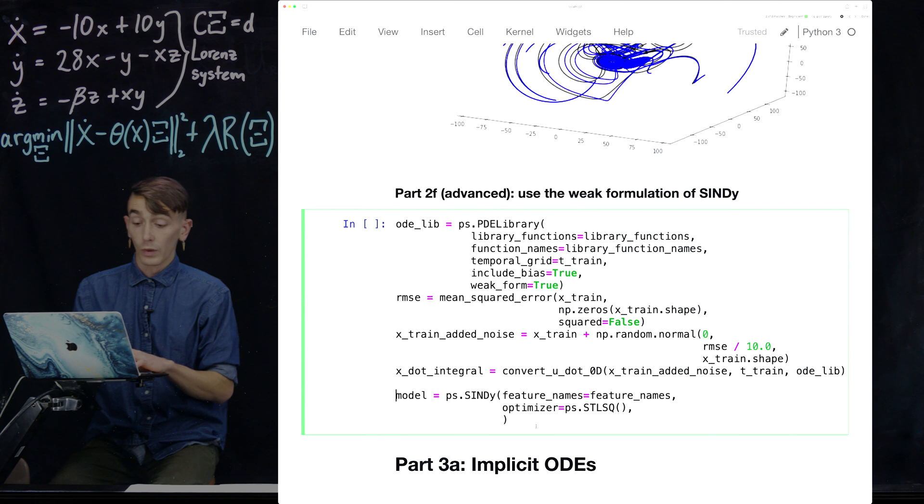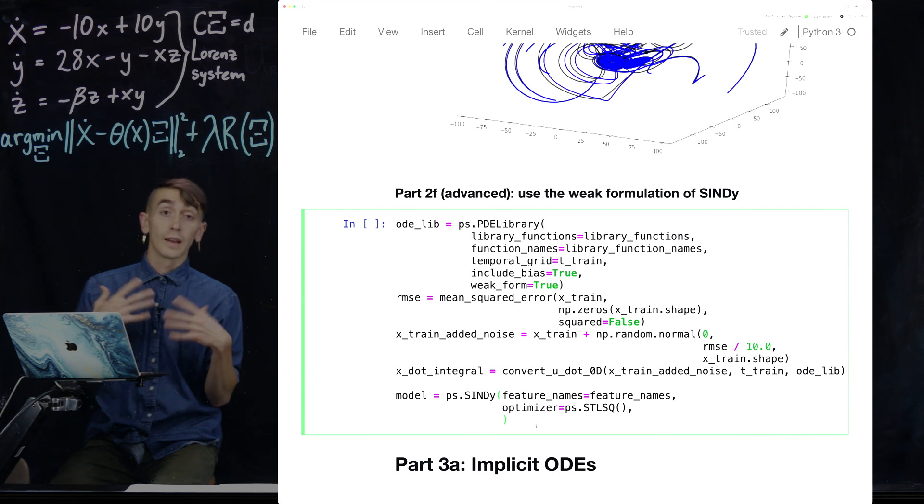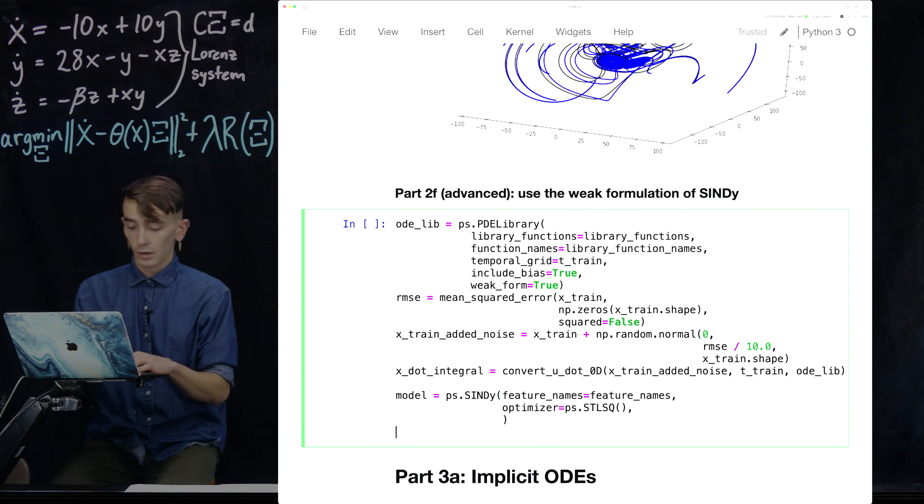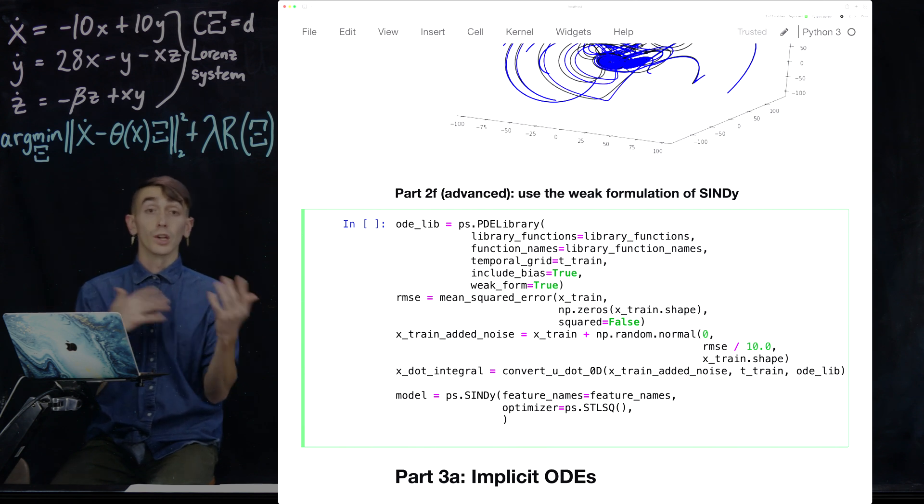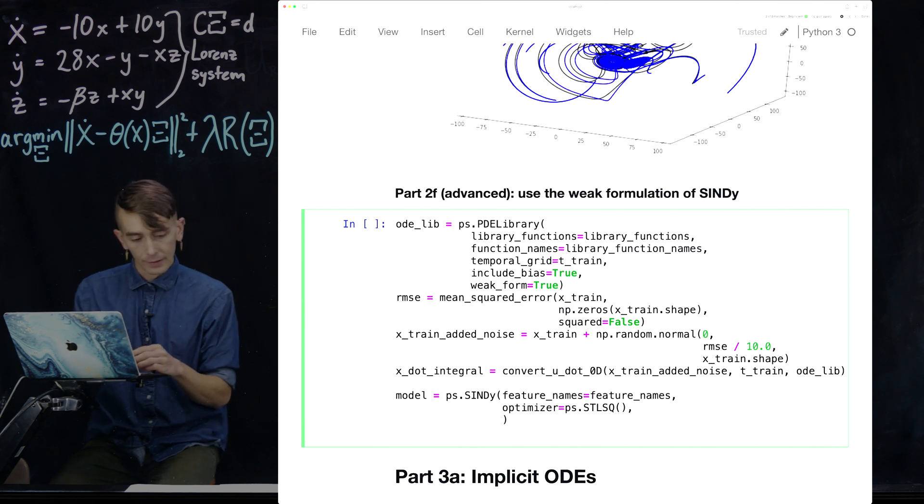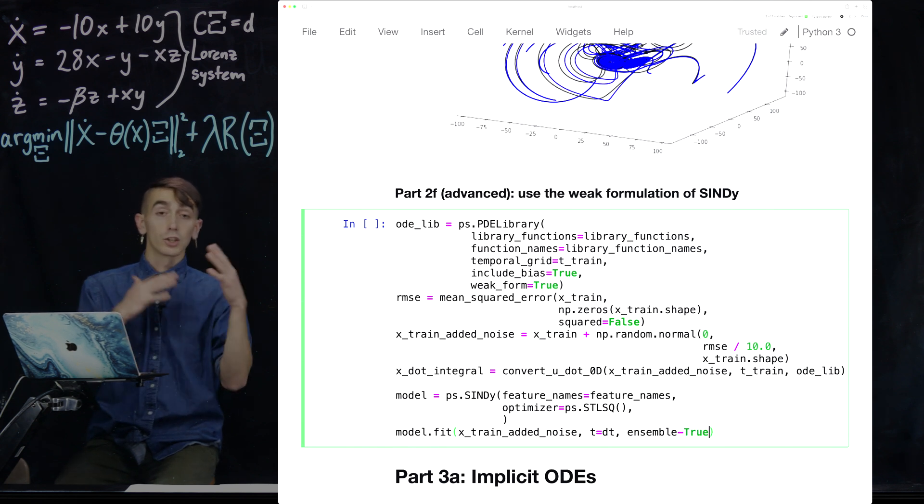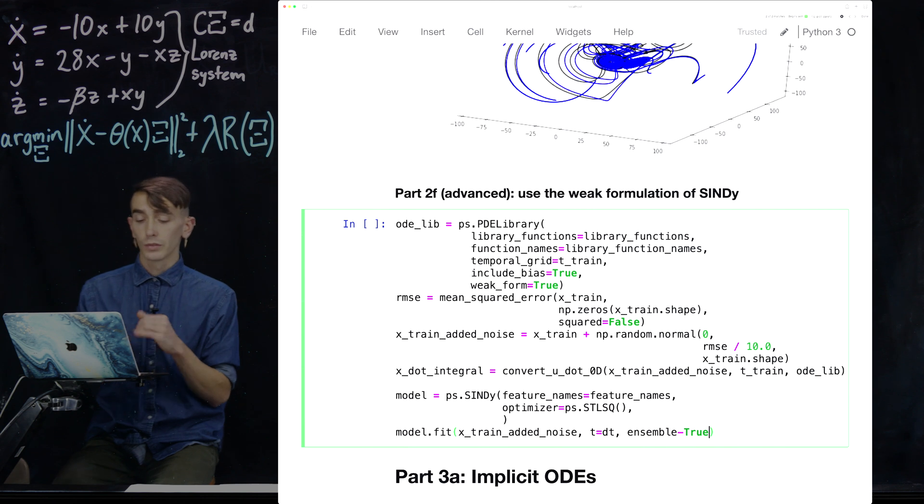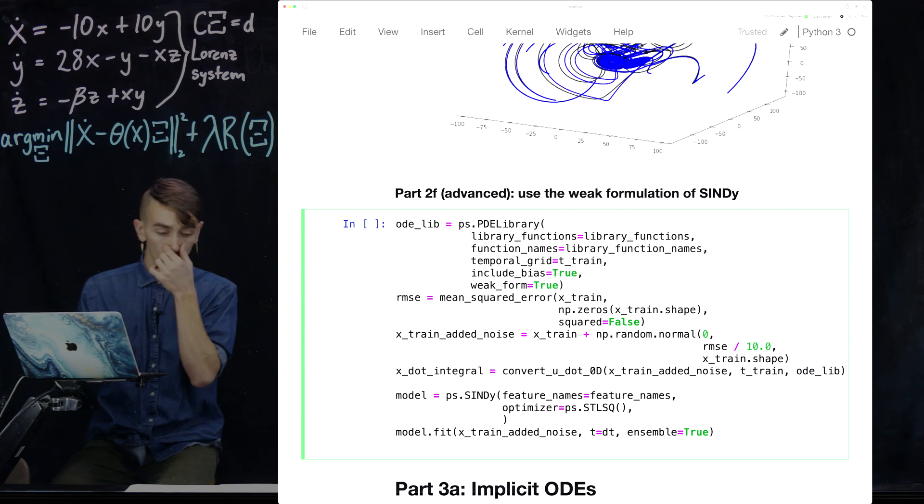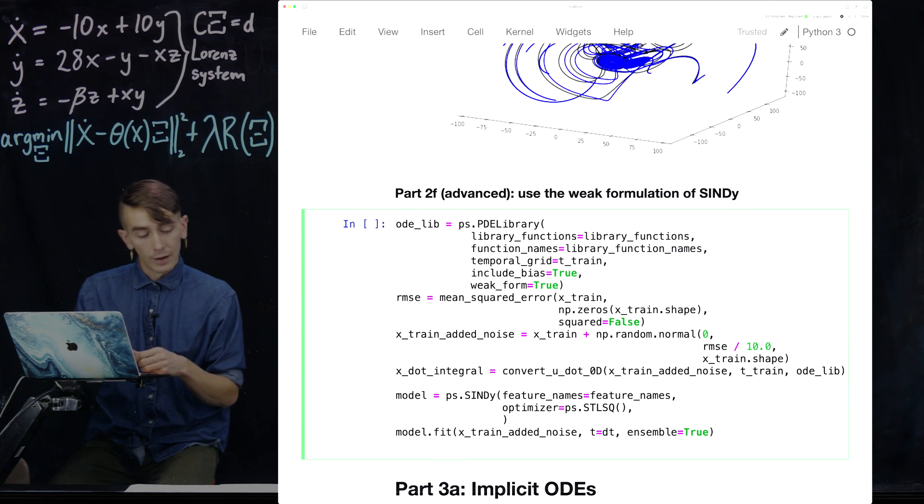First, actually, we're gonna fit a model without the weak form. Because actually, we wanna compare, how does the model do on this 10% noisy Lorenz data without the weak form? And then, how does it do with the weak form? So then, we're gonna define the model without that special library. It'll default to a quadratic polynomial library. So these are gonna be equivalent libraries. Just one will be using the weak formulation and one won't. And then, let's see. So we model.fit Xtrain added noise with time step. And we're actually gonna use ensembling here to actually check the statistics of the two different types of models and see which is doing better in an average sense. So that's good. So that's the normal Cindy results.